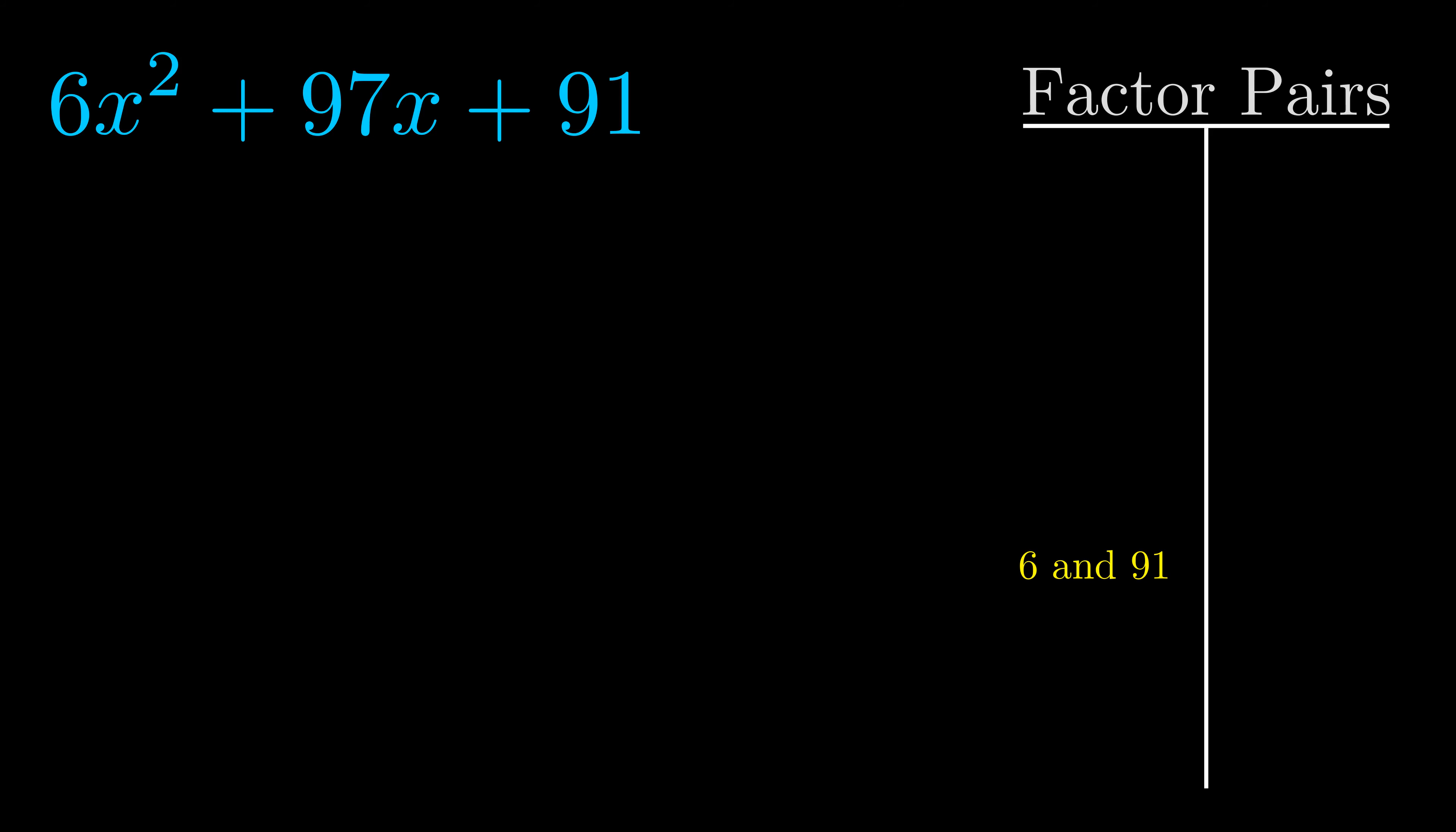Now once we have this factor pair what we want to do is we want to use it to split up the b value.